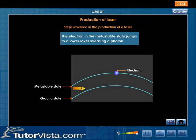The electron in the metastable state jumps to a lower level releasing a photon.